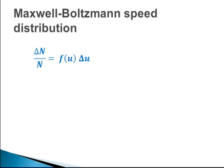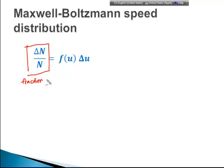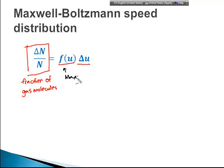That problem has been there since the 1800s. And according to two scientists, Maxwell and Boltzmann, the fraction of gas molecules — this represents the fraction of gas molecules — is given by the product of this function and delta U. This function is what we call the Maxwell-Boltzmann distribution function.